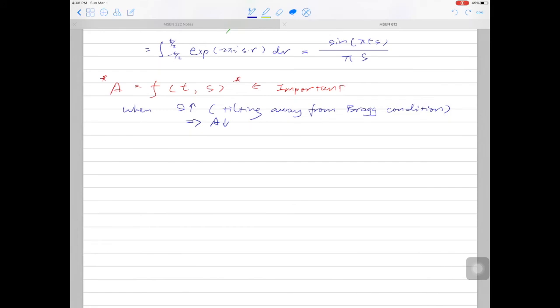What if we increase t, the sample thickness? By increasing t, the amplitude of the diffracted beam will oscillate following the sine function. So the kinematical approximation can also explain the thickness fringes we see in TEM specimens.